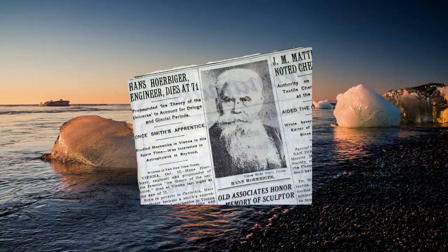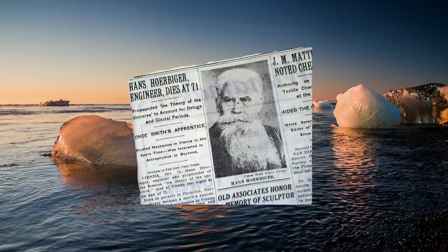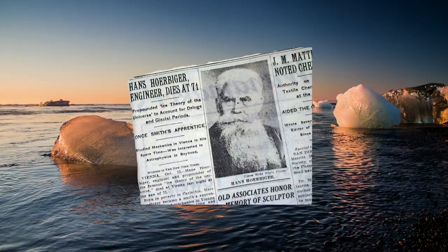Hörbiger died in 1931, before the rise of the Nazi party, whose connections to his theory leave his writings with a very troubling legacy. In the end, his theories were accepted by the establishment, but only after the dark spectre of racial fascism took over the minds of the German people and wreaked havoc upon the world.